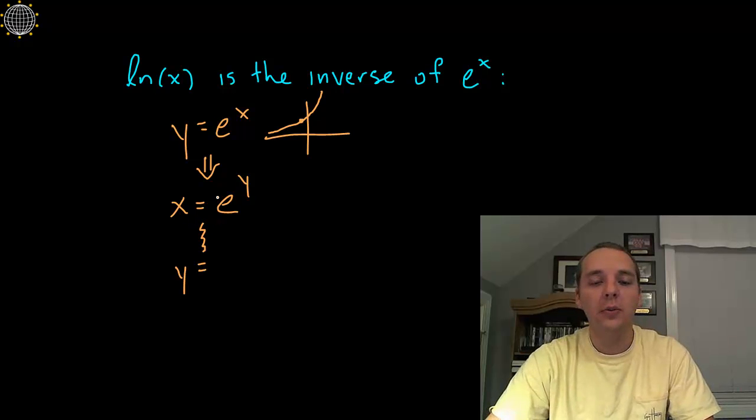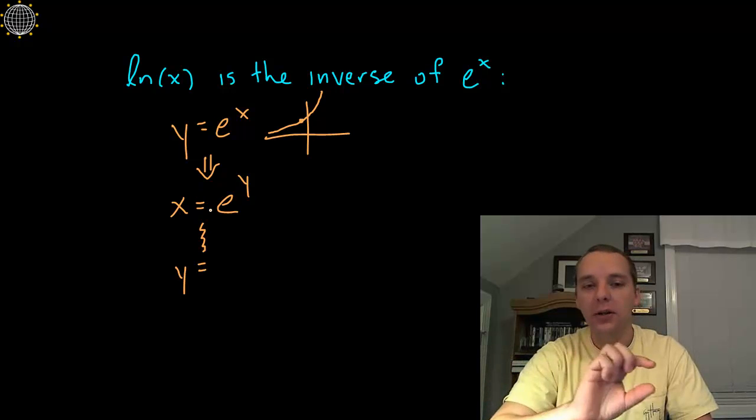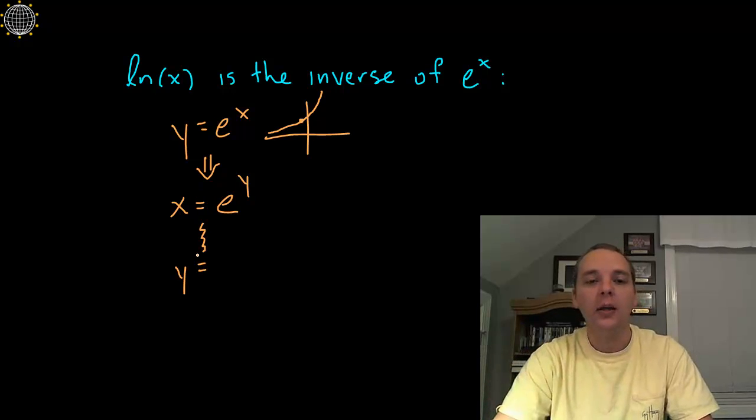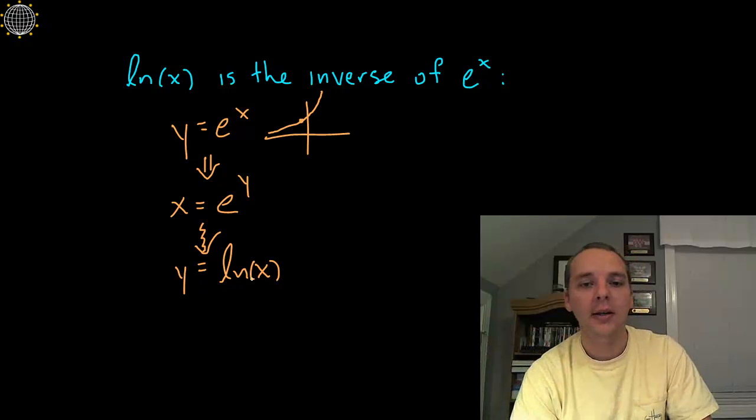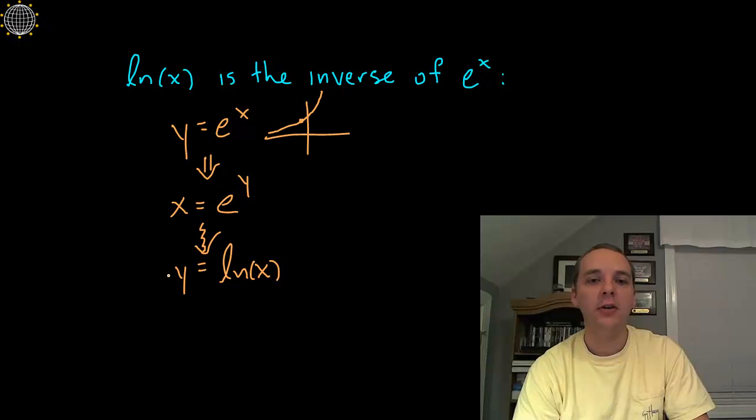So what we do is we wind up just basically agreeing just to leave it like that, but we're just going to write it a different way. So we're going to express this x = e^y as y = ln(x). So really, this logarithmic expression is simply some version of an exponential relationship, namely the inverse relationship for the exponential function y = e^x. So that's where he comes from.